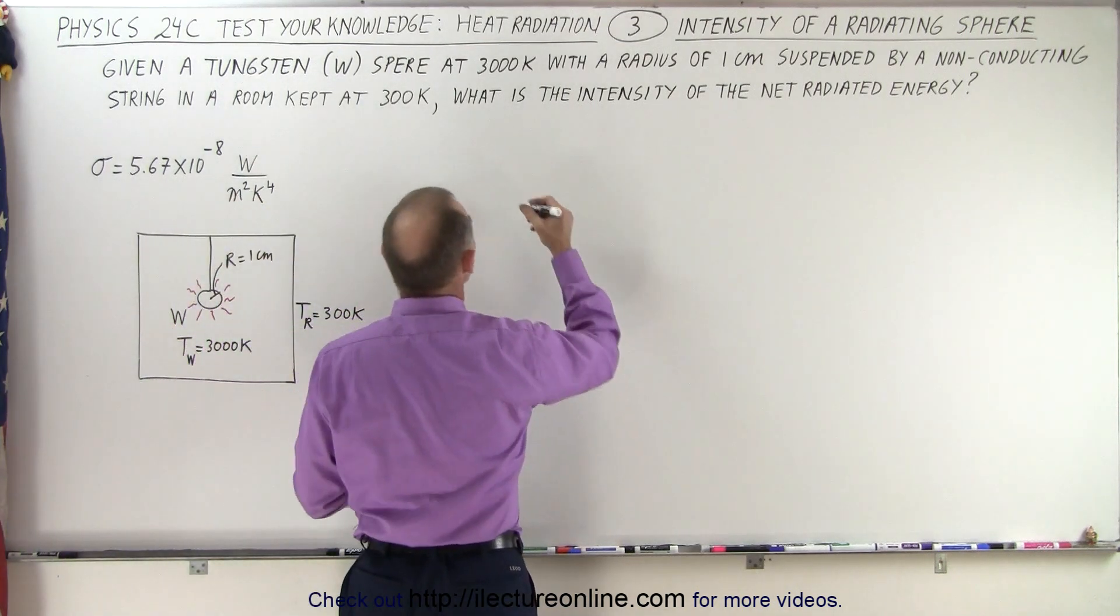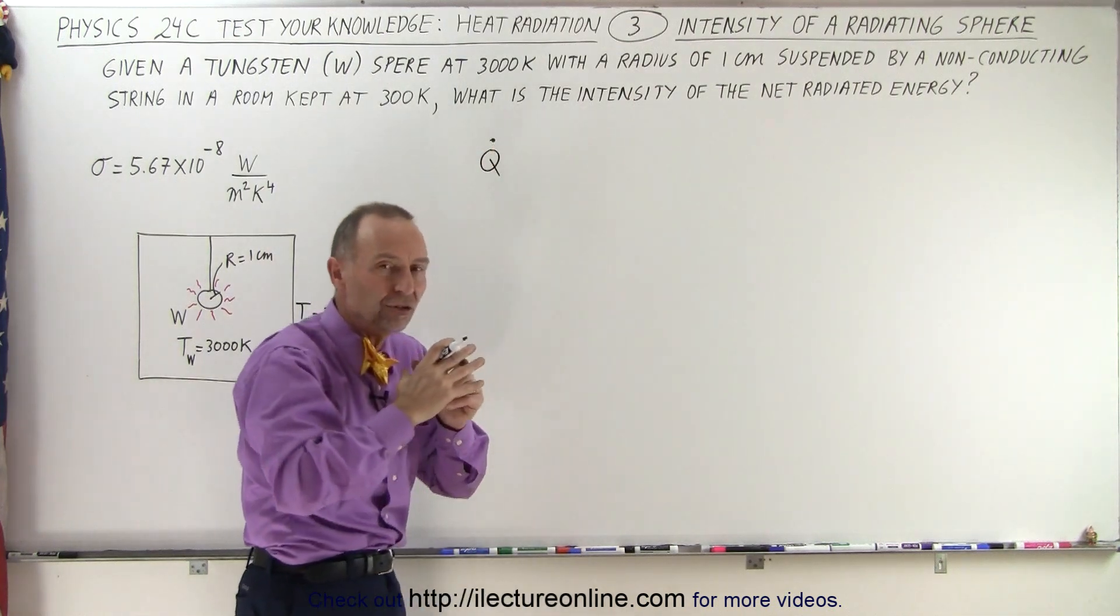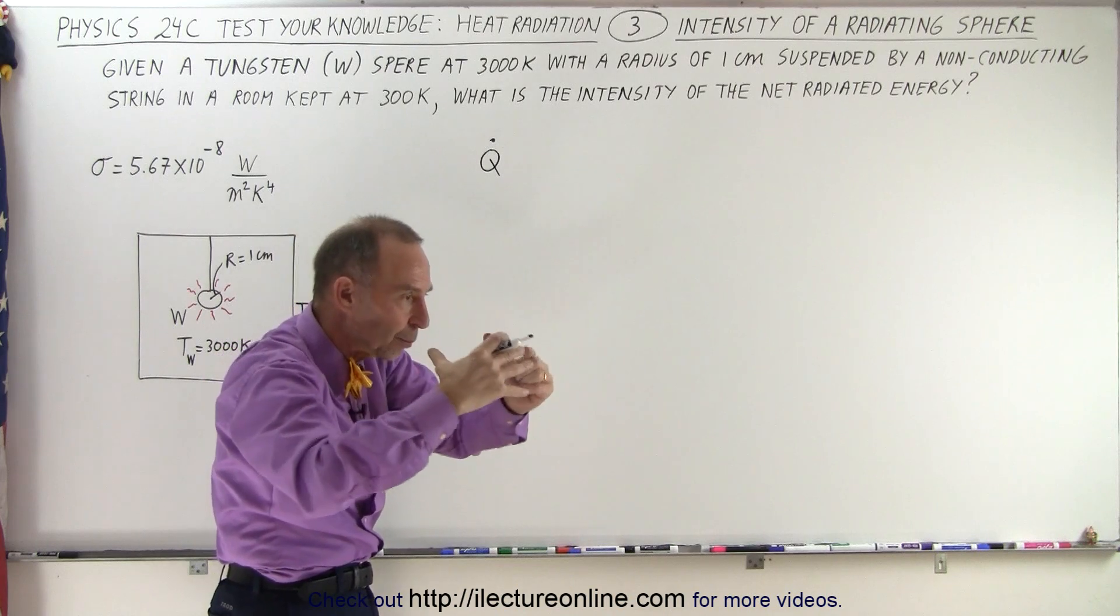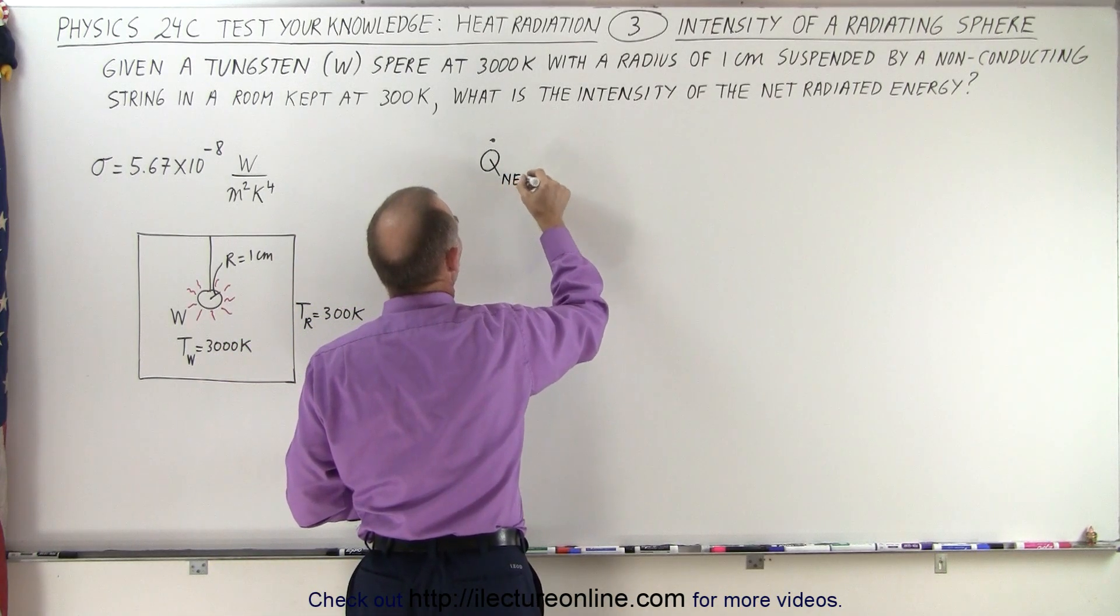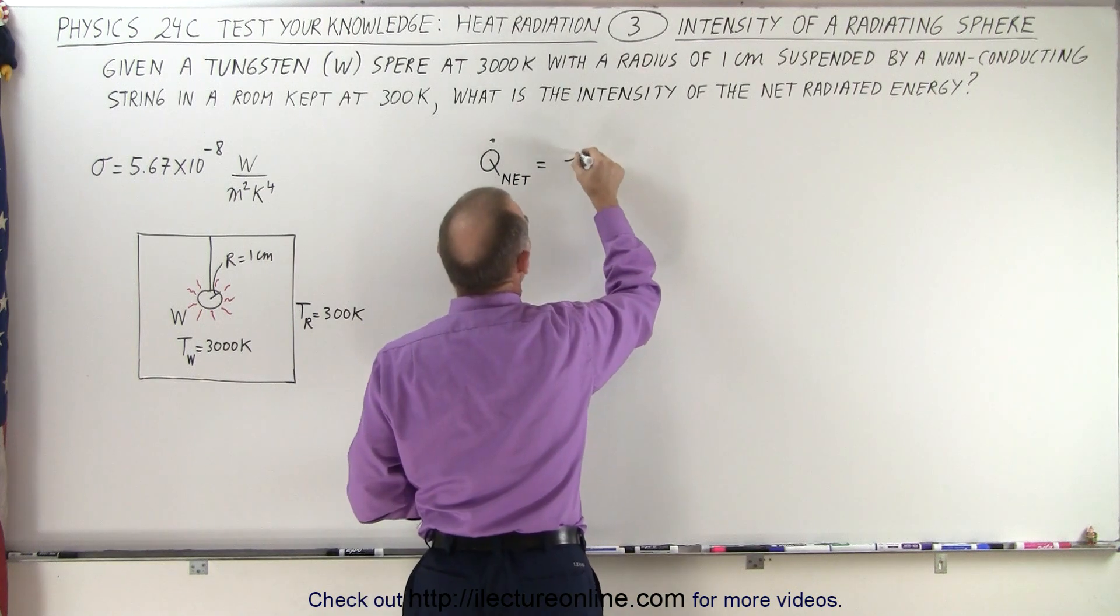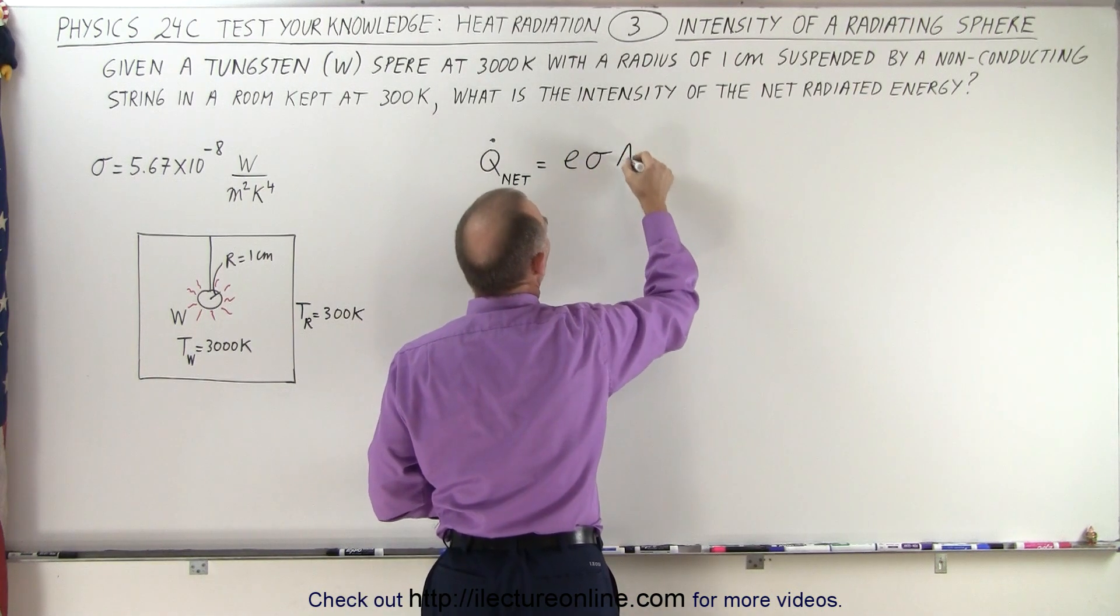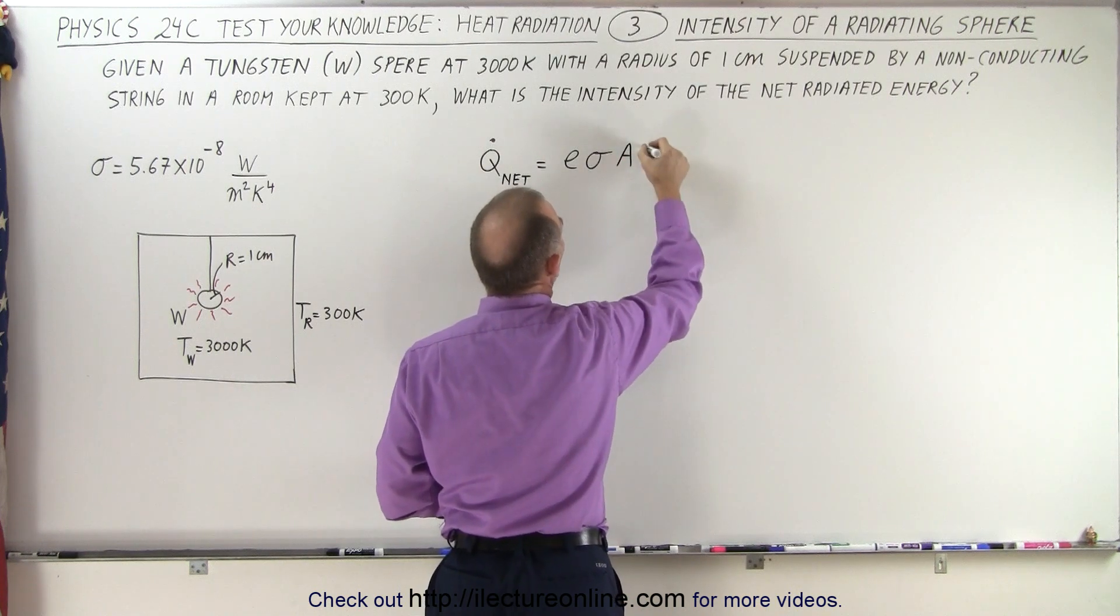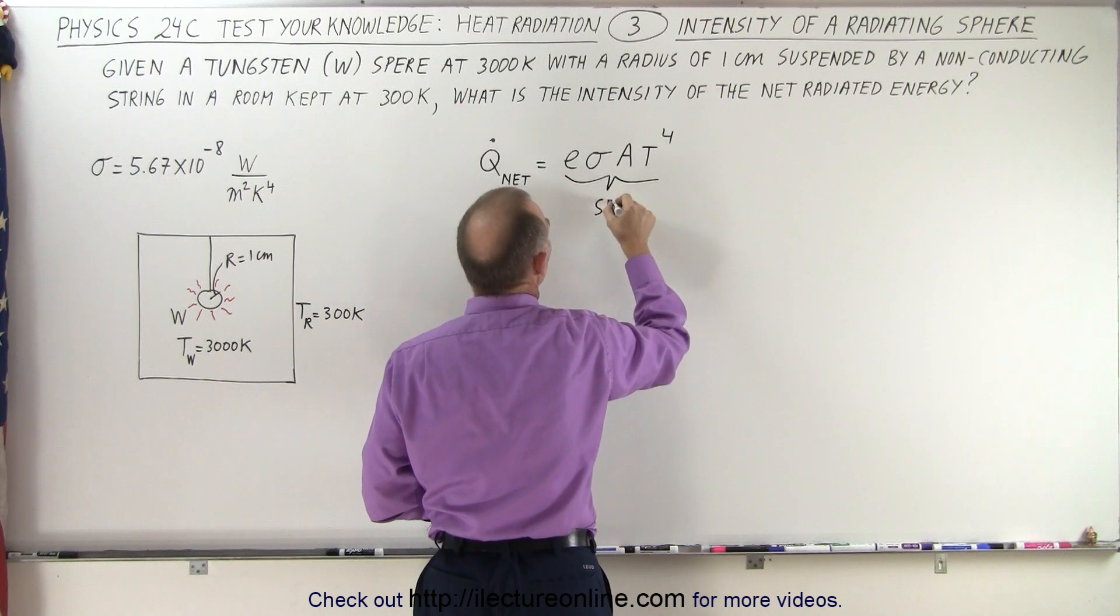That says that the radiated energy net, because there will be the difference between the radiated energy away from the sphere and then received from the surroundings, the Q net will be equal to the emissivity times sigma times the cross-sectional area times the temperature to the fourth power, and that would be from the radiating sphere,